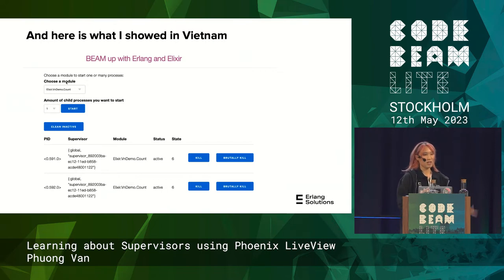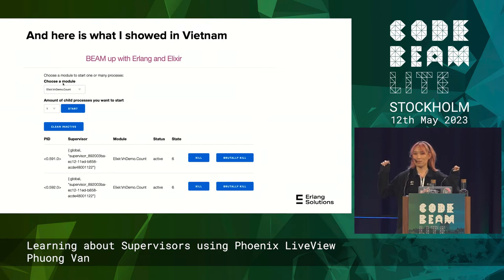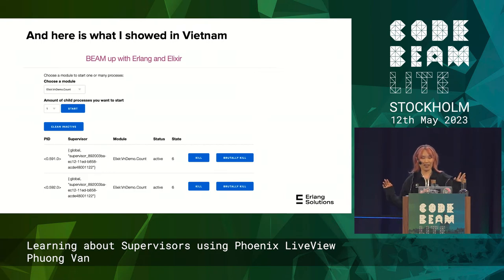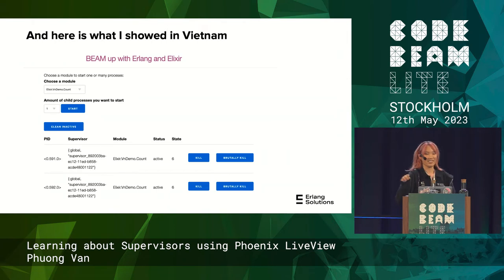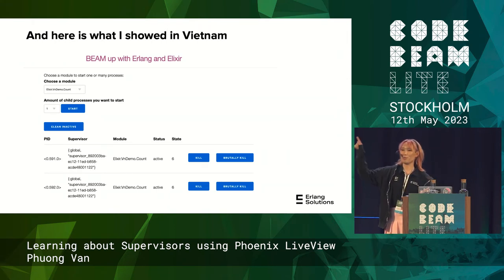This is what I had in Vietnam. Basically I have a module — an example OTP module like a GenServer or GenStateMachine — and you can spawn child processes, then click a button to kill one, and it responds with a new PID showing the restart.